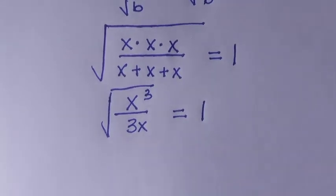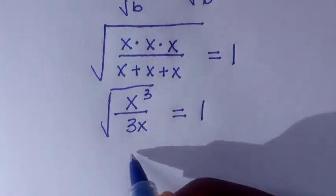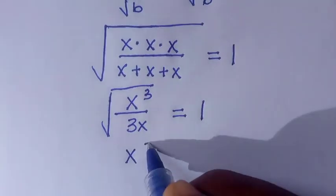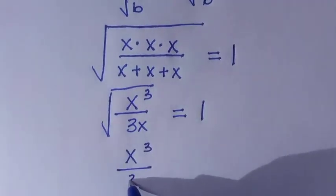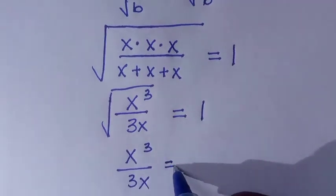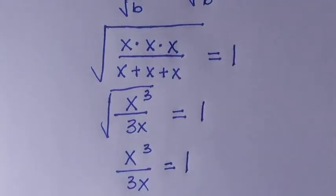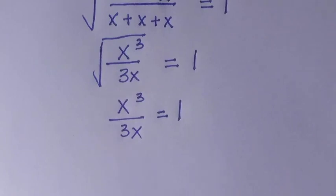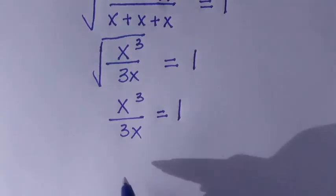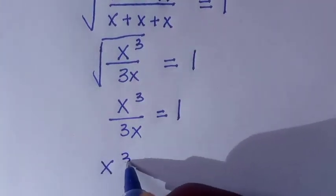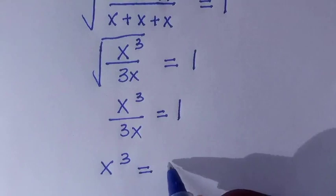We are going to eliminate the square root, then we take the square of both sides. By doing that, we have x to the power of 3 divided by 3x equals 1. Let's cross multiply. By doing so, we have x raised to the power of 3 equals 3x.